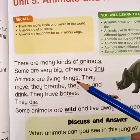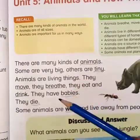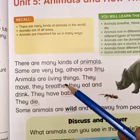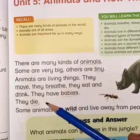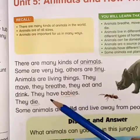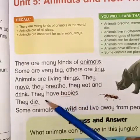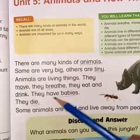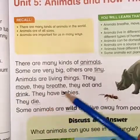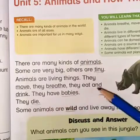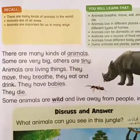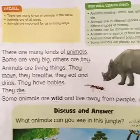Animals are living things. They move, they breathe, they eat and drink. Underline 'breathe,' 'move,' and 'drink' — animals move, breathe, and drink. They have babies — underline 'babies.' They also die.